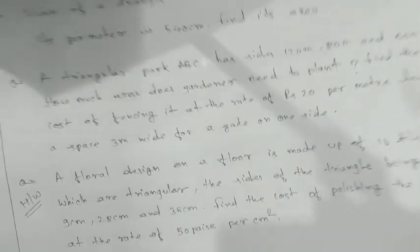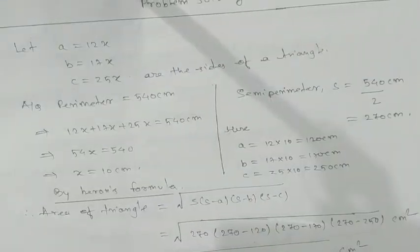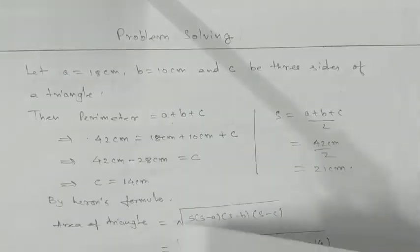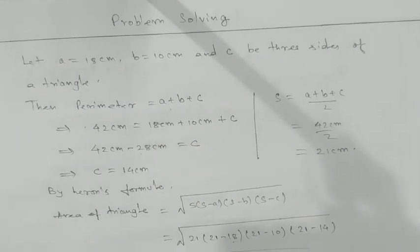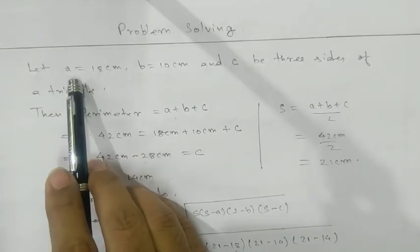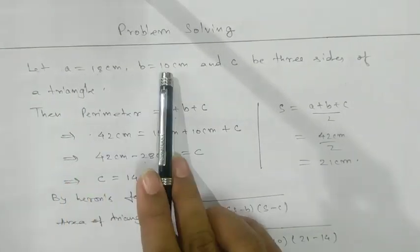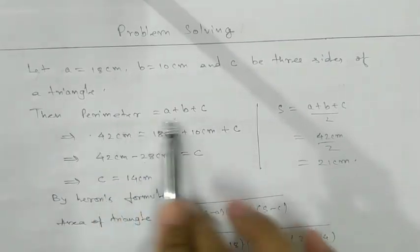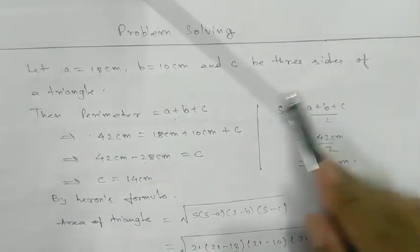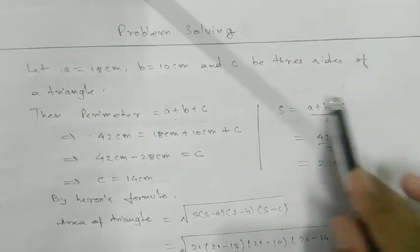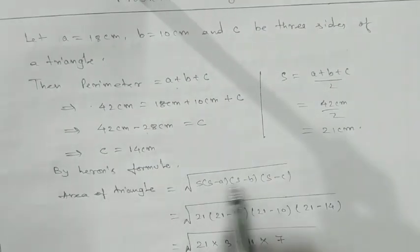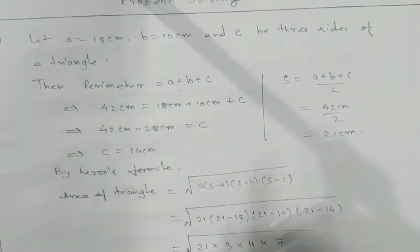So here we have the solving part, we are going to see the solving part, first one. So here the first one we are going to see here. See what we are taking let A is 18, B is 10, C is this. After that using perimeter concept, we are getting 14 cm. And then we will use to find the semi perimeter. And then by Heron's formula, we are applying here area of triangle concept and we are getting.